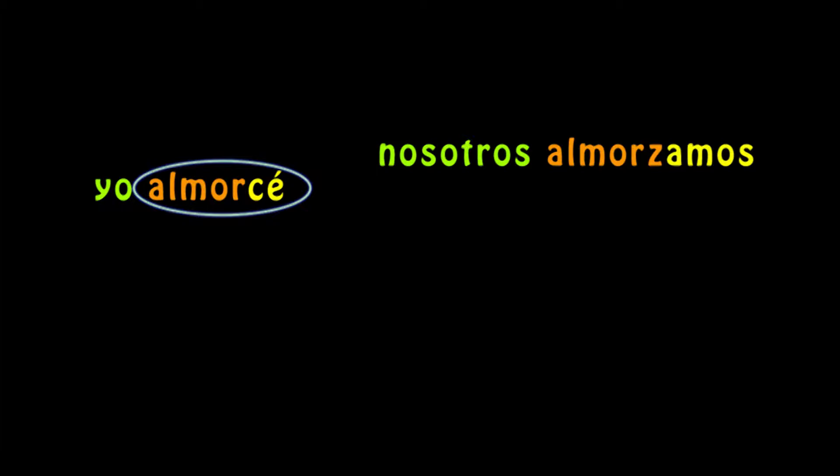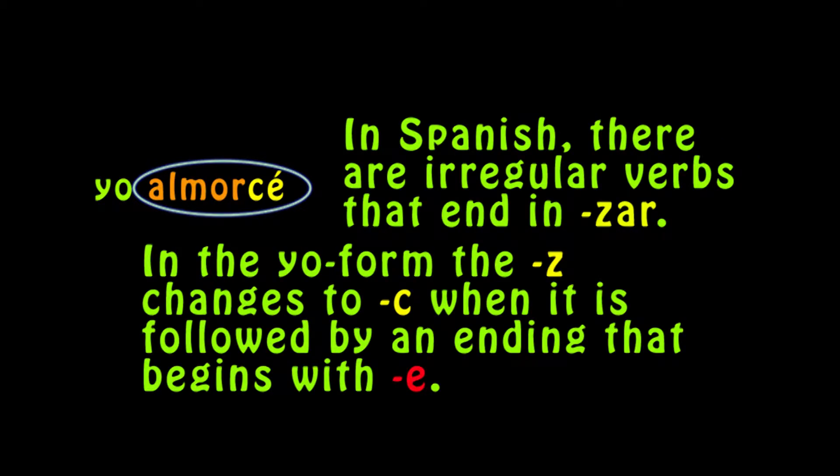If you notice, "nosotros almorzamos" is the same in the present as it is in the preterite. Another thing that you need to notice is "yo almorcé" is the only one that changes from a Z to a C. The reason for that is because in Spanish, there are irregular verbs that end in -ZAR. In the yo form, the Z changes to a C when it is followed by an ending that begins with E.